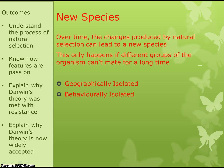For those doing the higher tier, over time the changes produced by natural selection can lead to a new species once the organisms become different enough. However, this can only happen if the organisms within one group cannot mate with organisms from another group — so they would have to be either geographically or behaviourally isolated.